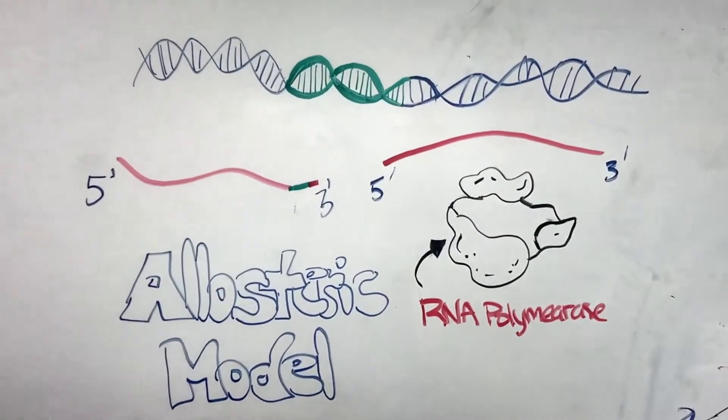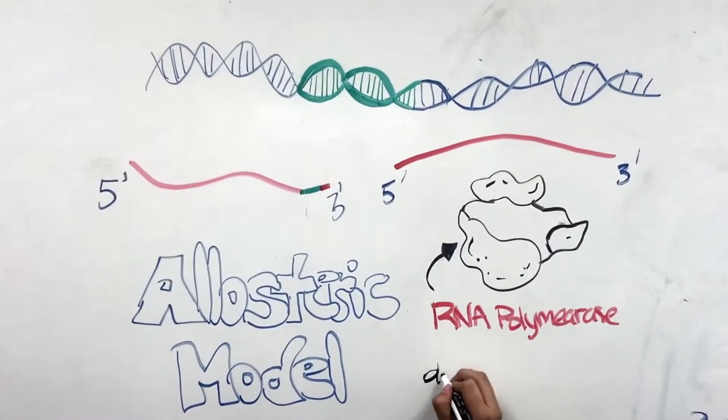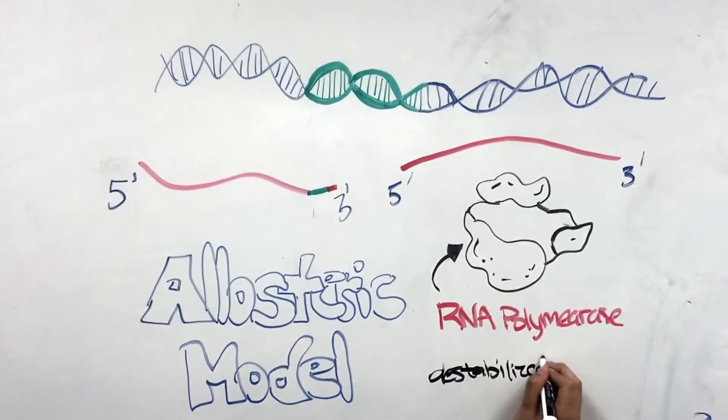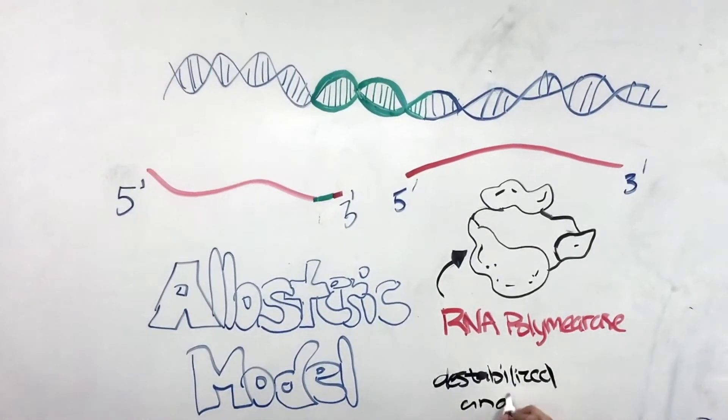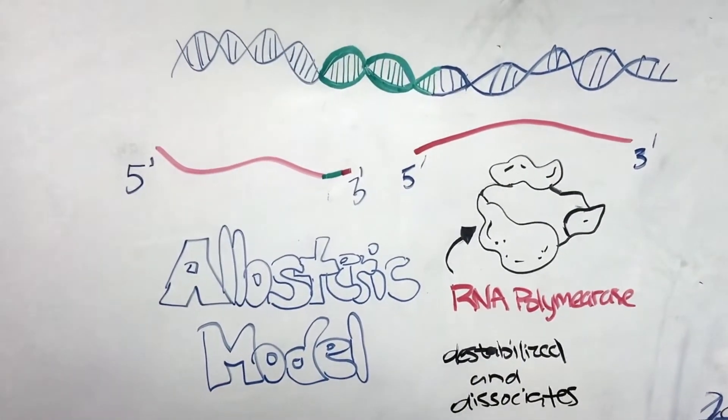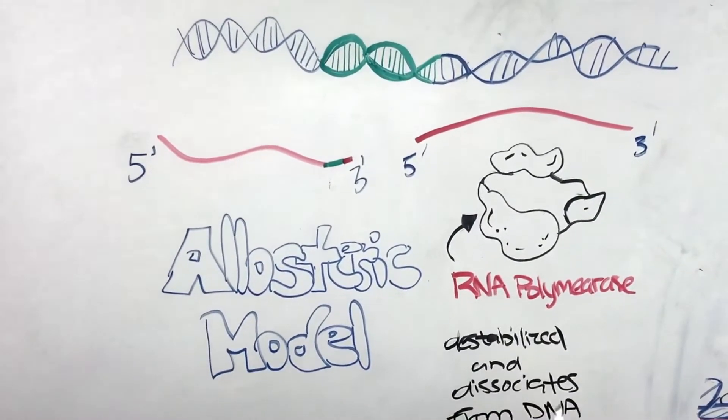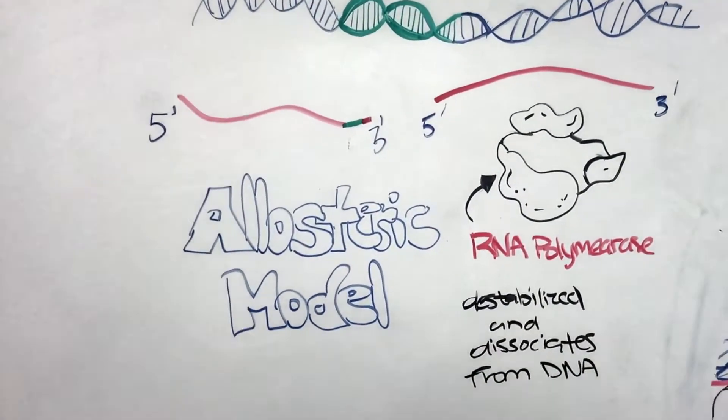The second one is called the allosteric model. According to this model, RNA polymerase 2 becomes destabilized after it has transcribed the poly-A signal sequence. Eventually, it dissociates from the DNA strand and causes termination.